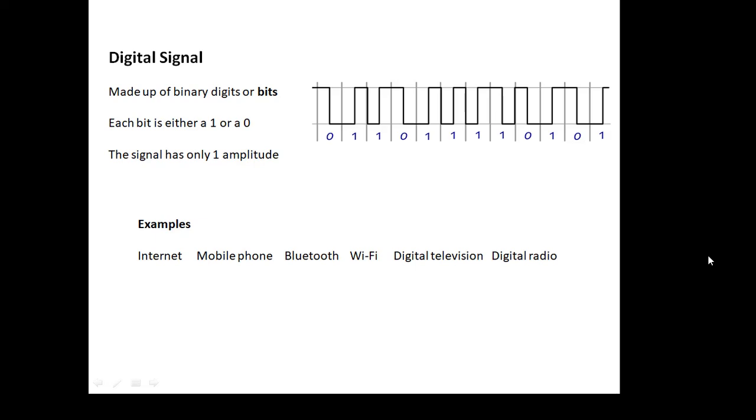Lots of examples of digital signals. The internet is digital. Mobile phone signals are digital. Bluetooth, wifi, digital television, digital radio. They're all digital signals.